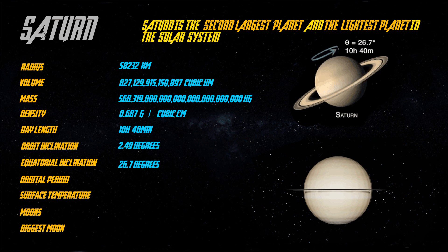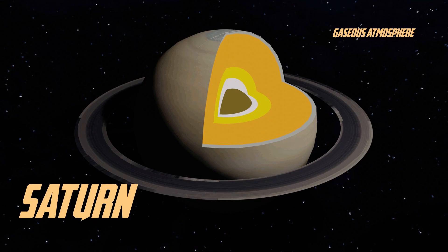Saturn has 83 moons. The biggest moon of Saturn is Titan. It has mainly five layers.